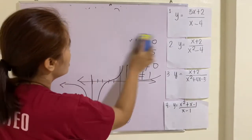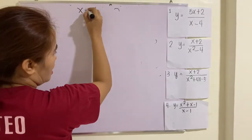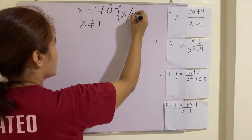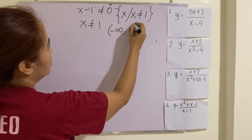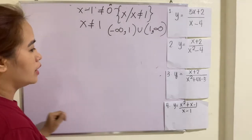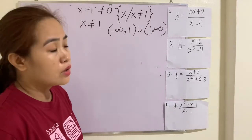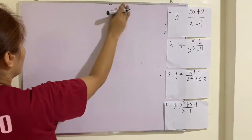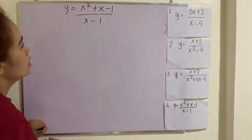Example number 4. The domain is x minus 1 is not equal to 0, so x is not equal to 1. In set notation, this is the set of all x's such that x is not equal to 1. In interval notation: negative infinity, comma 1, union 1, positive infinity. For the range, the degree of the numerator is greater than the degree of the denominator. In that case, you need to solve for x. We have y equals x squared plus x minus 1 over x minus 1.